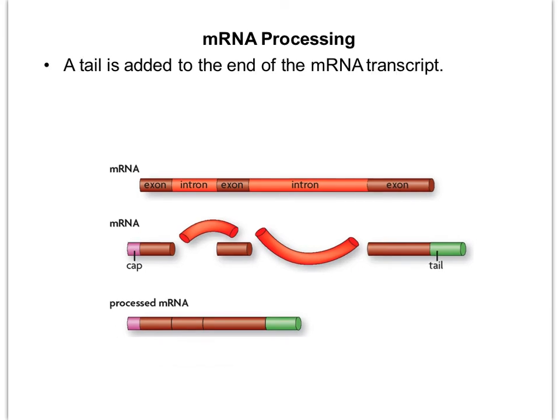A tail is also added to the end of the mRNA transcript — sometimes called the poly-A tail because it is literally a string of adenine nucleotides repeated over and over. This protects the actual message of the mRNA from being degraded by enzymes in the cytoplasm. If those enzymes do break anything down, they will start breaking down the adenines at the end rather than the coding message.